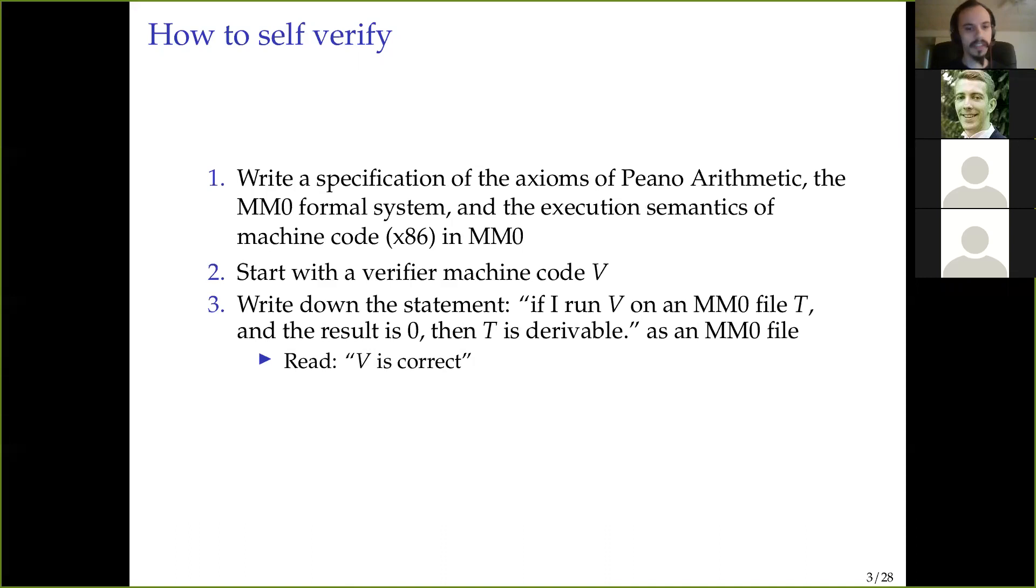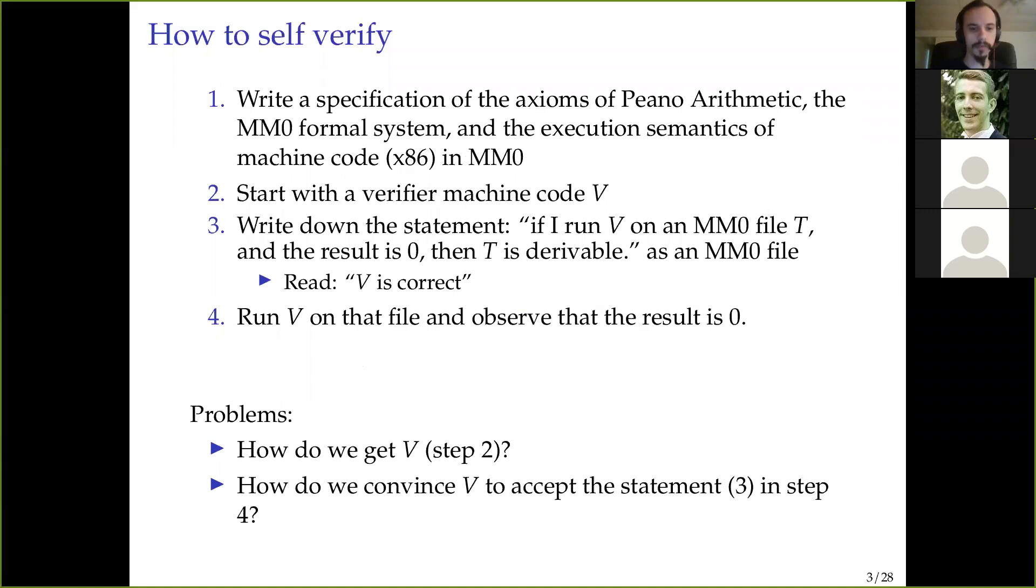And then you have a verifier machine code v, and I'll get back to how we get this v. And then we write down the statement, well, if I run v on some MM0 file t, and it returns with success, then t is derivable. You take that entire statement and you write it down as a MM0 file.